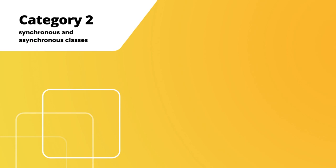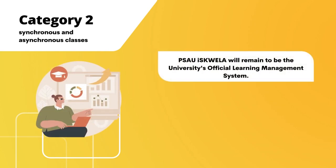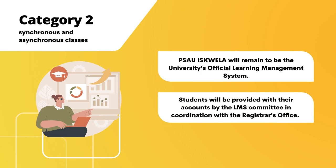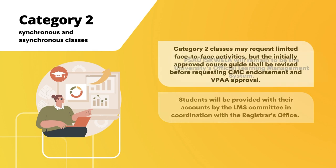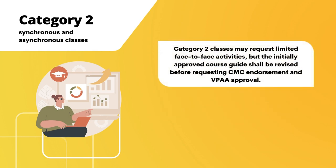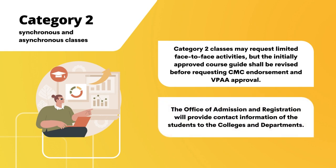Faculty members teaching Category 2 classes may proceed with the usual online synchronous and asynchronous activities. PSAU Escuela shall remain the university's official learning management system, where all class learning materials will be uploaded. The Registrar's Office, in collaboration with the LMS Committee, is responsible for ensuring that students are enrolled in the LMS. Category 2 classes may request limited face-to-face activities, but the initially approved course guide shall be revised before requesting CMC endorsement and VPAA approval. Prior to the start of classes, the Office of Admission and Registration will provide contact information for students to the colleges and departments.